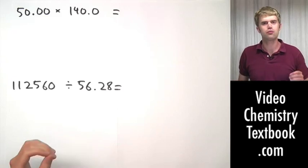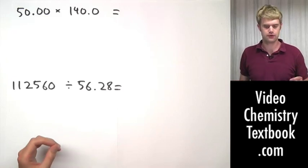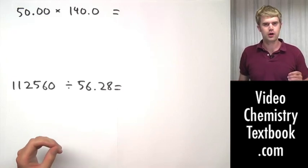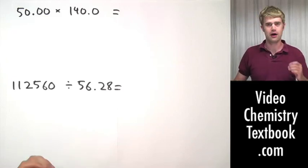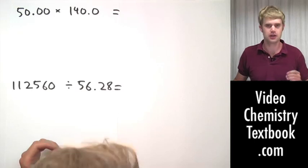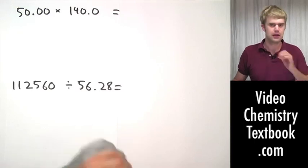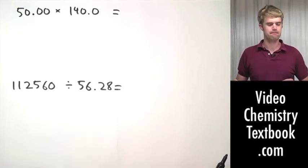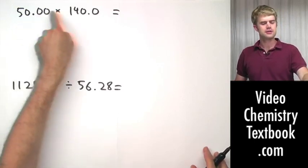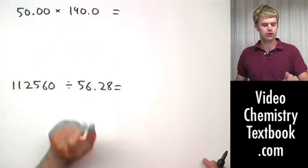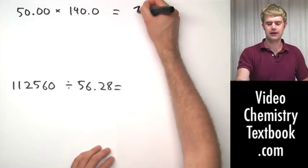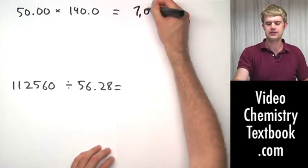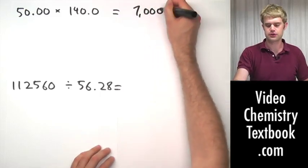Scientific notation can be really useful when we want to show which zeros from a calculation are significant. Let's say that we do this multiplication problem right here. The answer that we're going to get is 7,000.